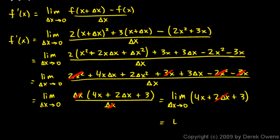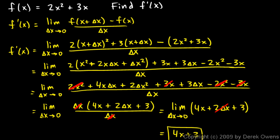So the answer is 4x + 3 — that is the derivative of our original function 2x² + 3x. The derivative is itself a function. For example, if you put in x = 2, f prime of 2 = 4(2) + 3 = 11. That means at x = 2, the slope of the original function is 11. This derivative function tells us the slope of the original function at any given point.